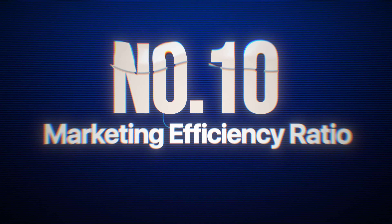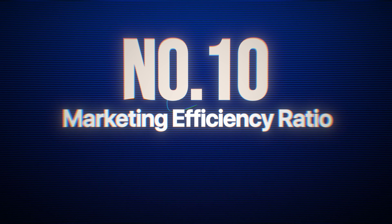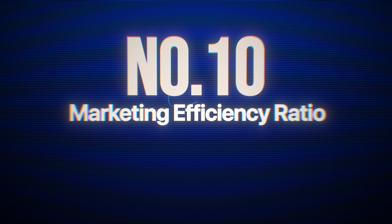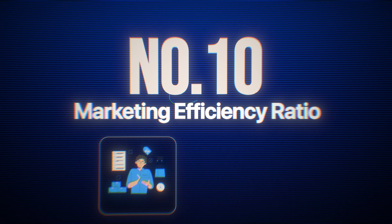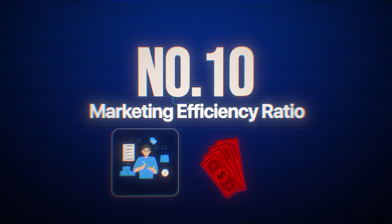Marketing efficiency ratio (MER) is another one of my favorites — the one I'm leading with now for most of our clients. This metric shows how efficiently your entire marketing department is converting spend into revenue. To get your MER, divide your total revenue by your total marketing spend, including ads, salaries, content, everything. If you made $200,000 in revenue and spent $40,000 on marketing, your MER is five. It really helps you get clear on how much your marketing is contributing to your revenue.